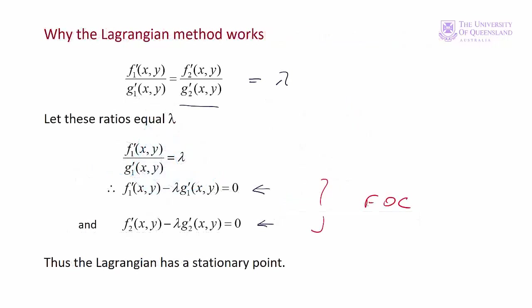We've seen how to derive the first order conditions geometrically. With three unknowns — x, y, and lambda — and adding the constraint we have three equations and three unknowns. In the next module we'll look at the second order conditions for the Lagrangian.